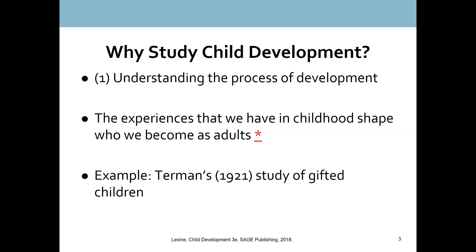We want to study child development in order to understand the basic process of development — how the traits, behaviors, and experiences that we have in childhood shape us as we grow into adolescence and eventually adulthood. Because what happens to us early in life, particularly in the first three to five years, really sets us up for how we will experience life later. What happens early on in childhood affects us throughout the rest of our lives.